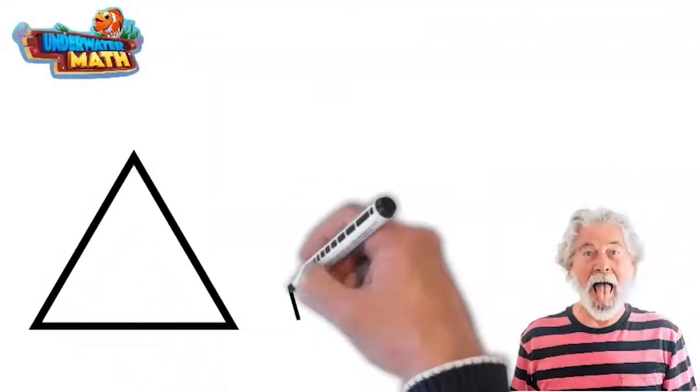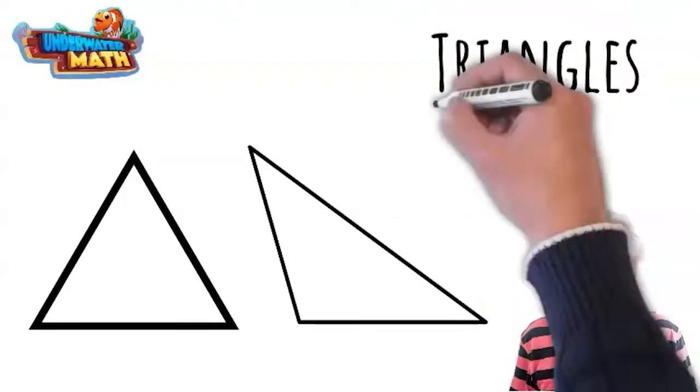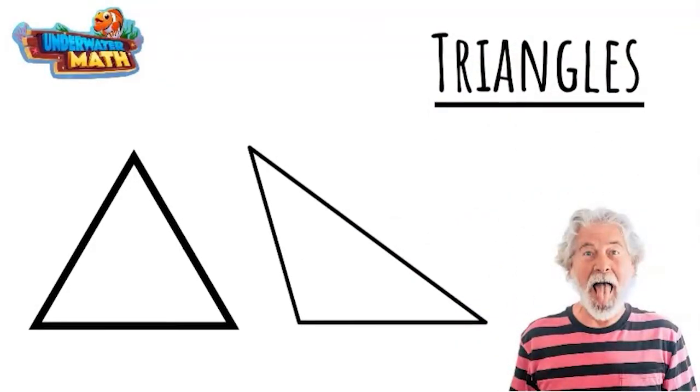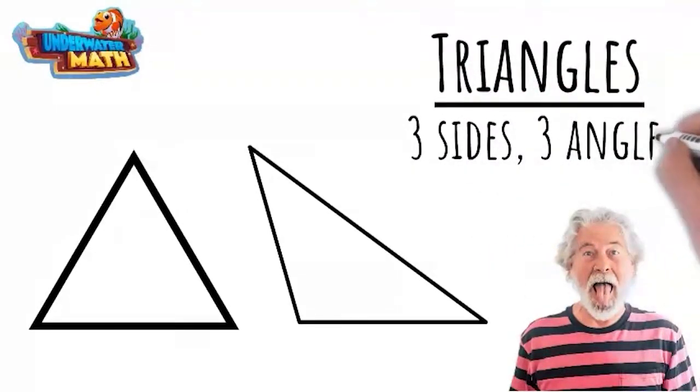Polygons can have different numbers of sides. These three-sided ones are called triangles. Just like tricycles have three wheels, triangles have three sides and three vertices or corners. They also have three angles on the inside.